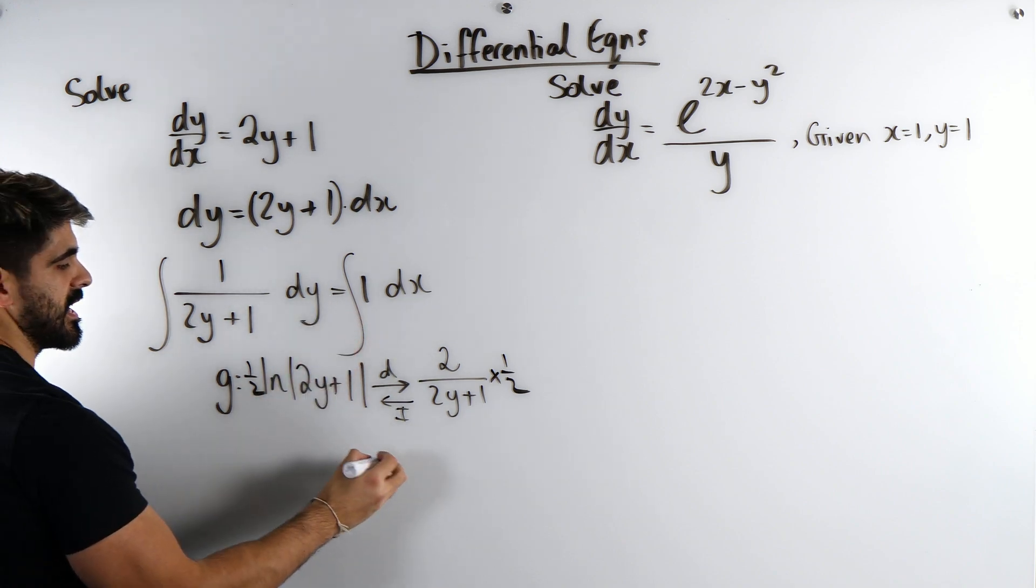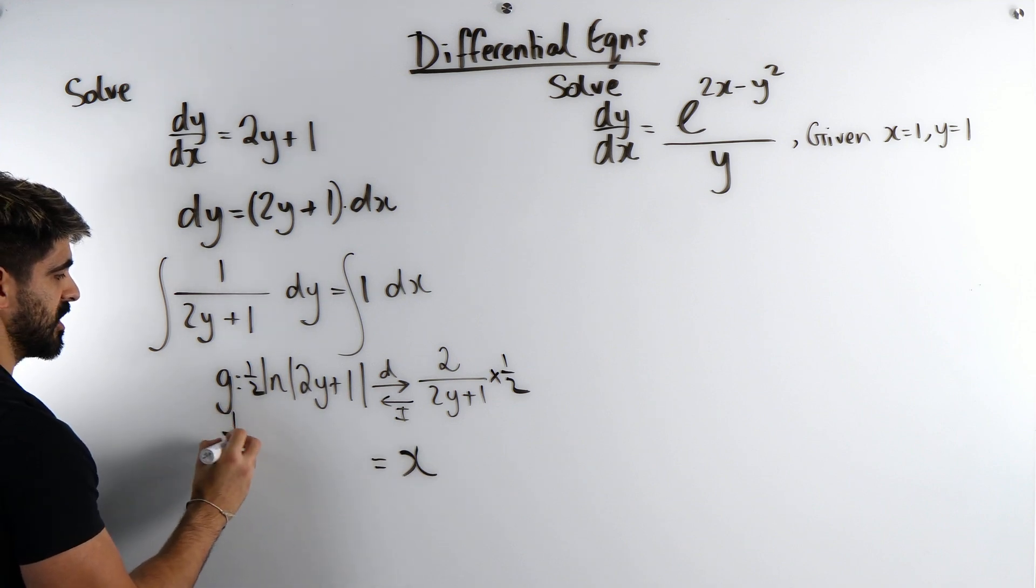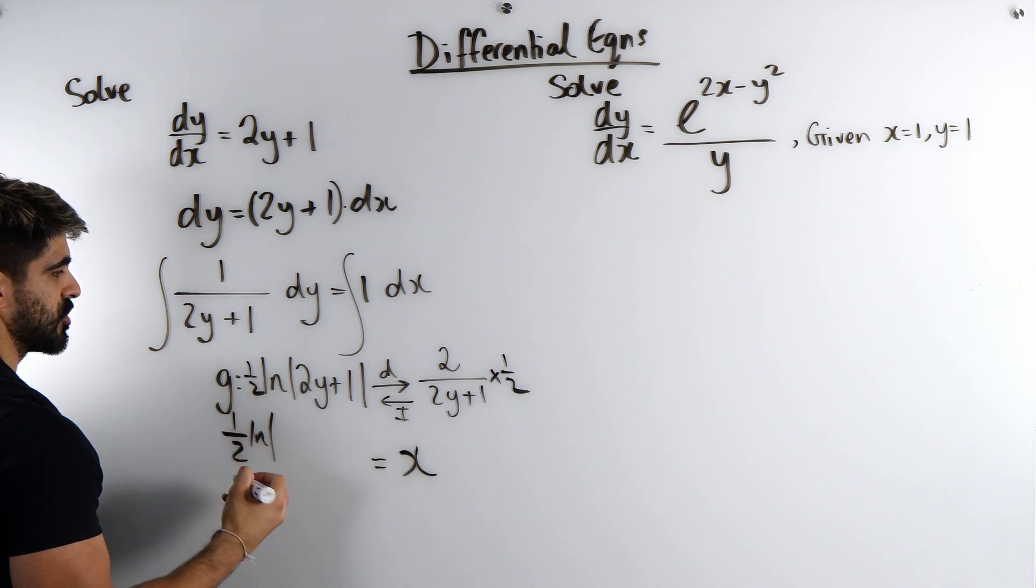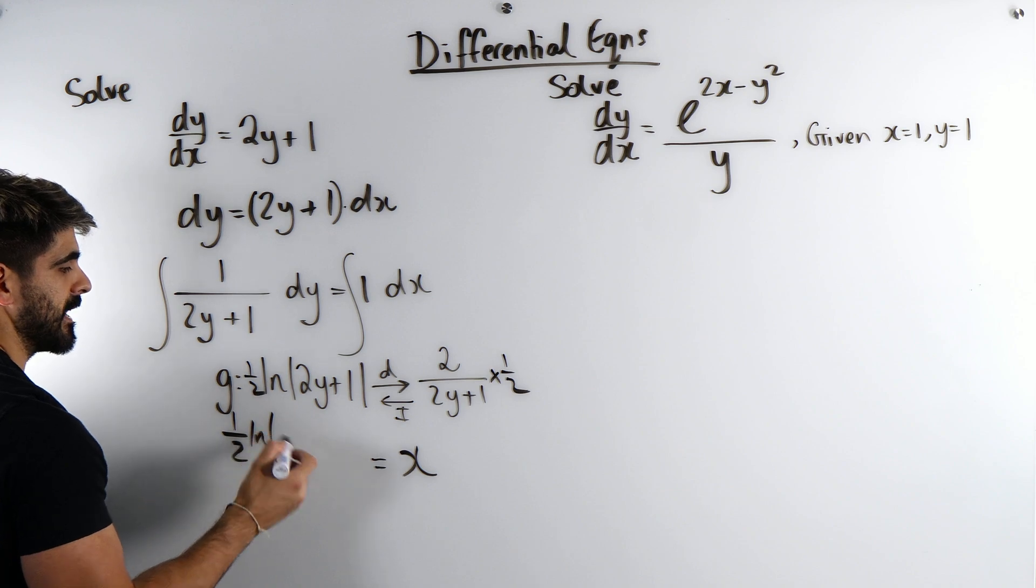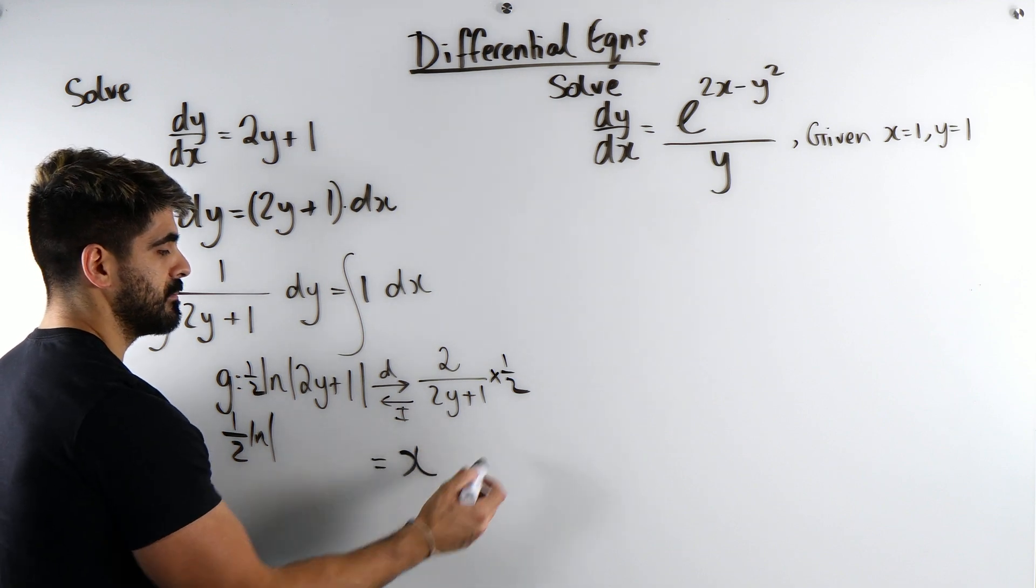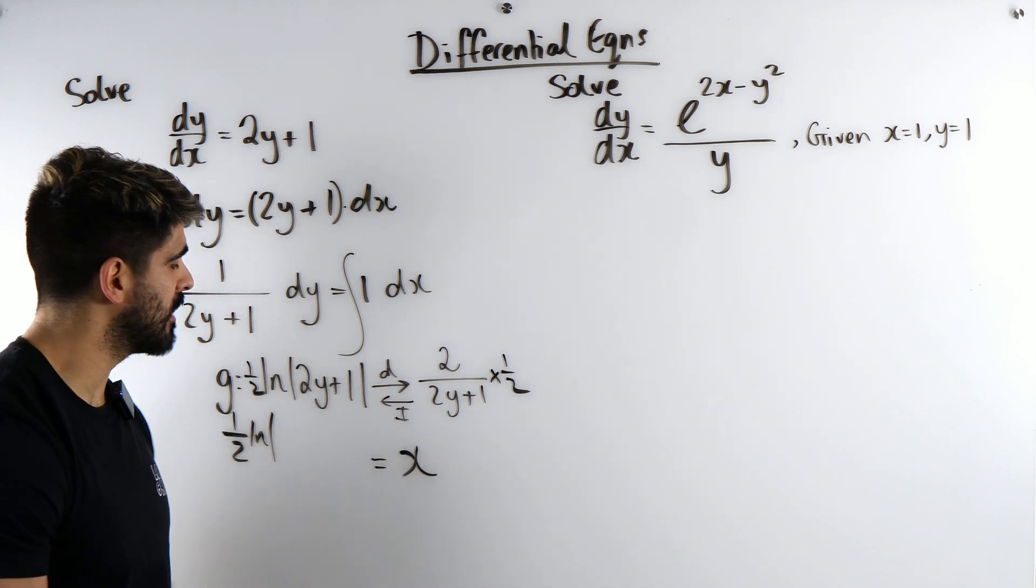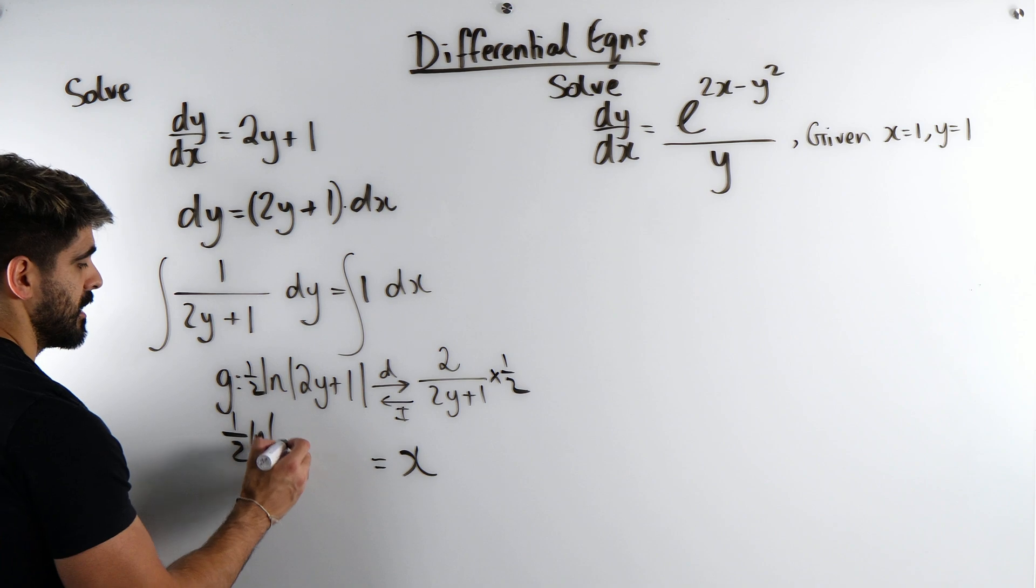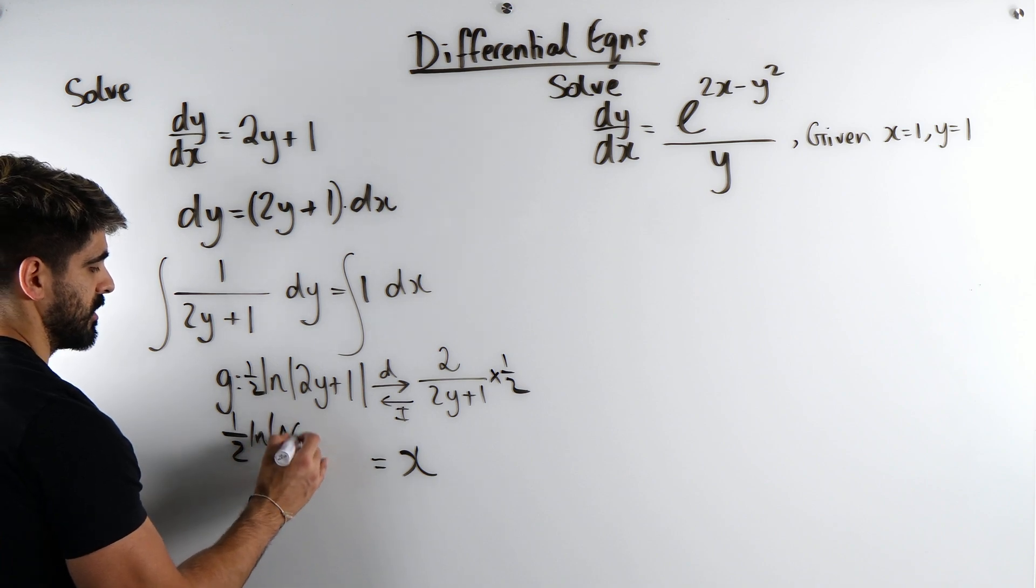That's our answer. 1 just integrates to x. Now, another cheeky Neil Does Maths trick here, or tip, is when you integrate you get the constant of integration. A lot of people put plus c. When you have ln, don't put plus c. Put your constant of integration within the ln.